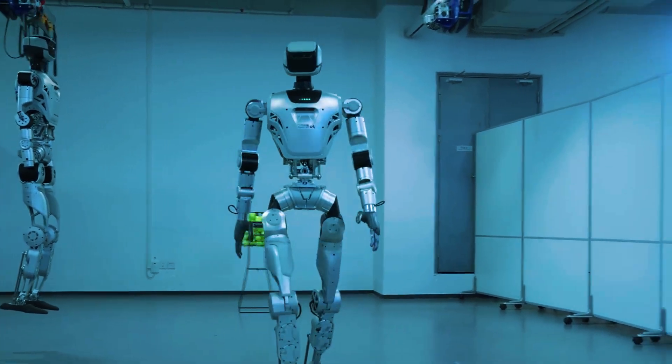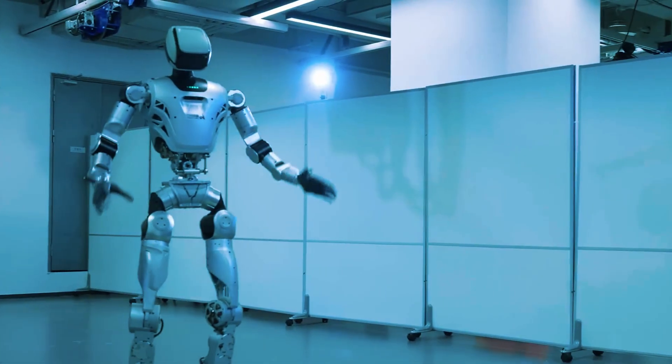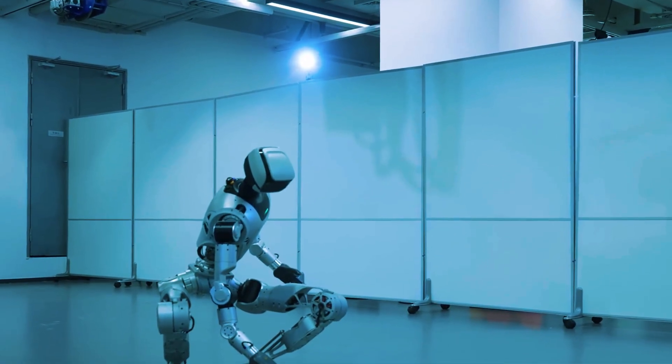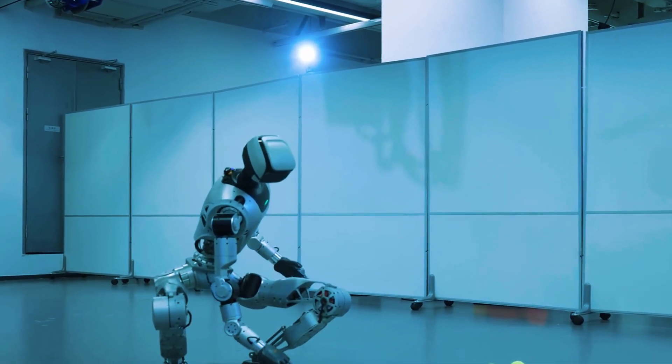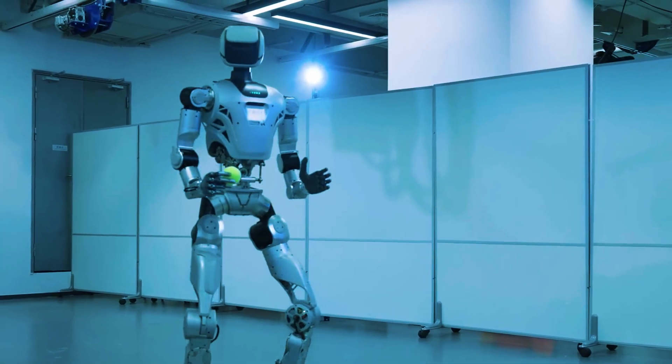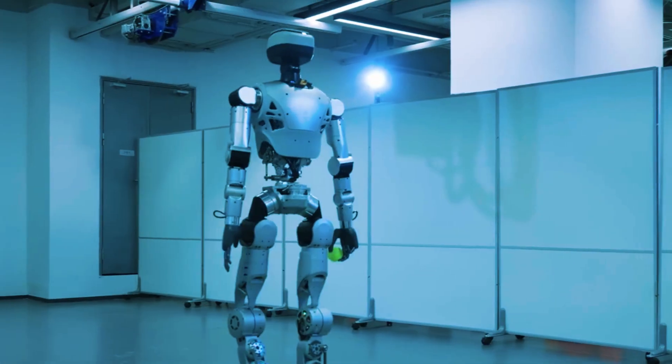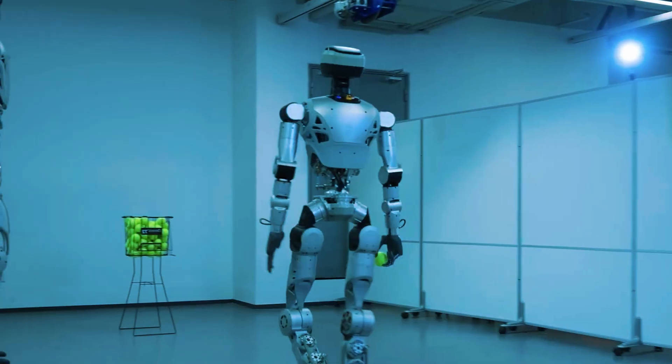But Ollie? Smooth. It lowers its body, reaches out with those mechanical hands, and scoops the tennis ball up like it's nothing. The crazy part? It doesn't topple over. It doesn't hesitate. It just does it.